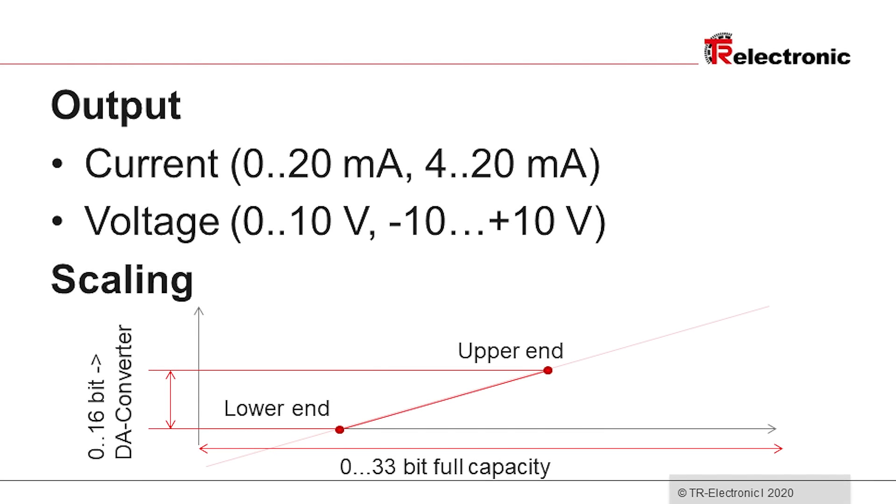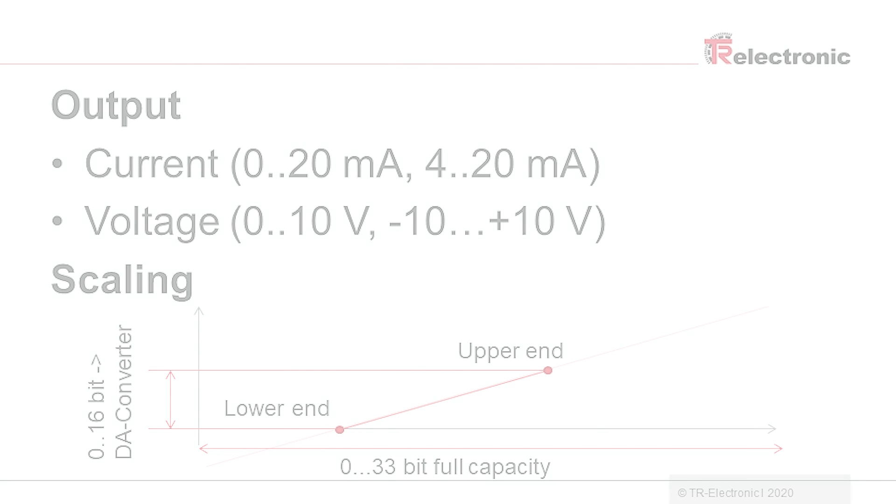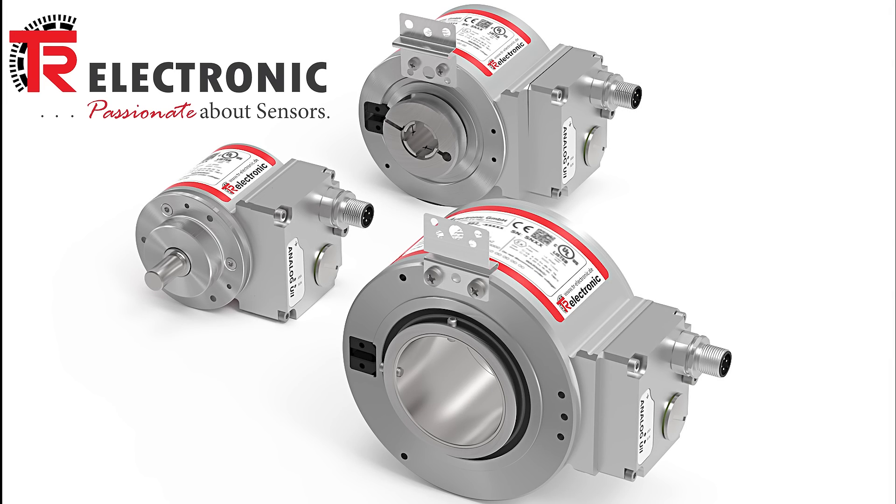Reversing the programming order of the two endpoints on the machine results in a direction change of the analog signal. The configuration is stored permanently in the device. Even if the power is lost, the analog output signal is instantly available on power-up.